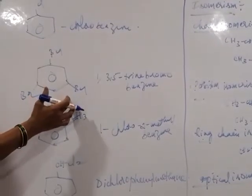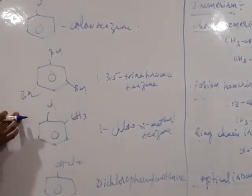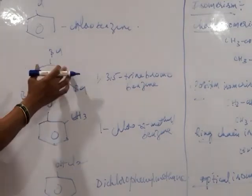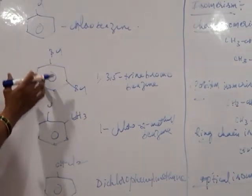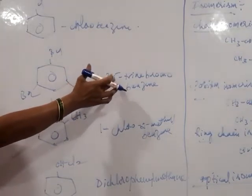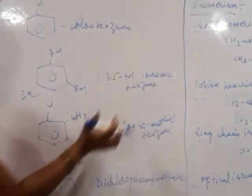Next, three bromine atoms attached to benzene ring. So first position, this is first position. 1, 2, 3, 4, 5, 6. So 1, 3, 5 tribromobenzene.